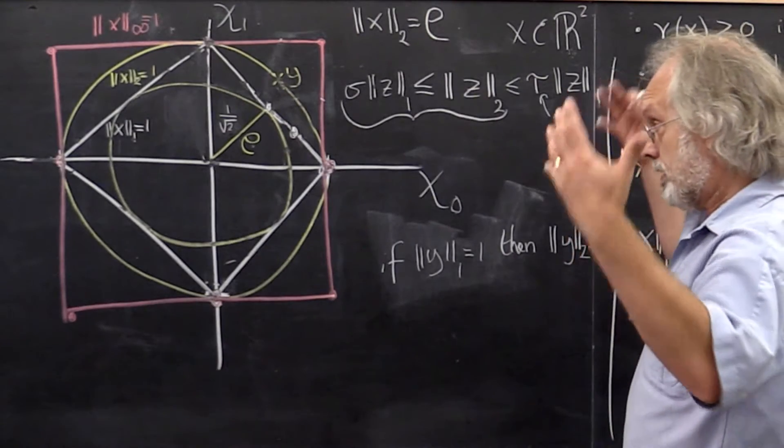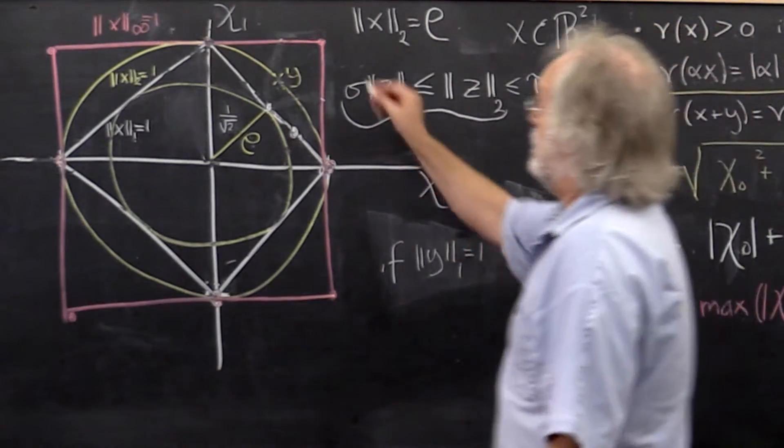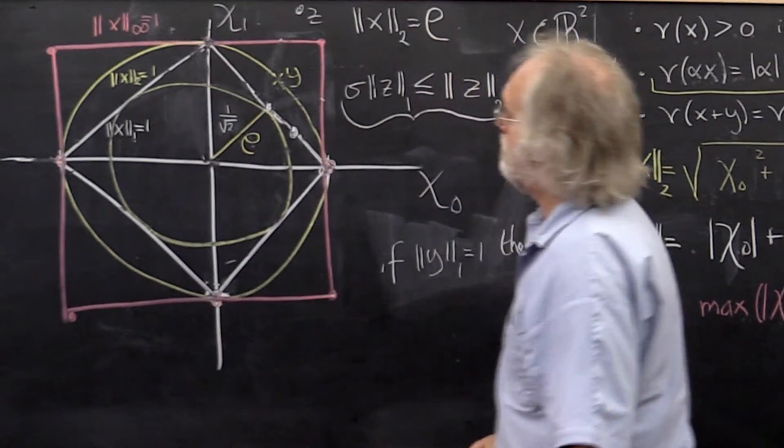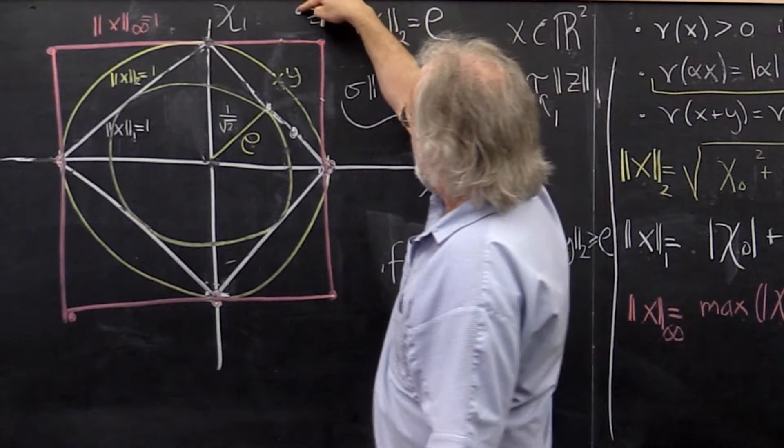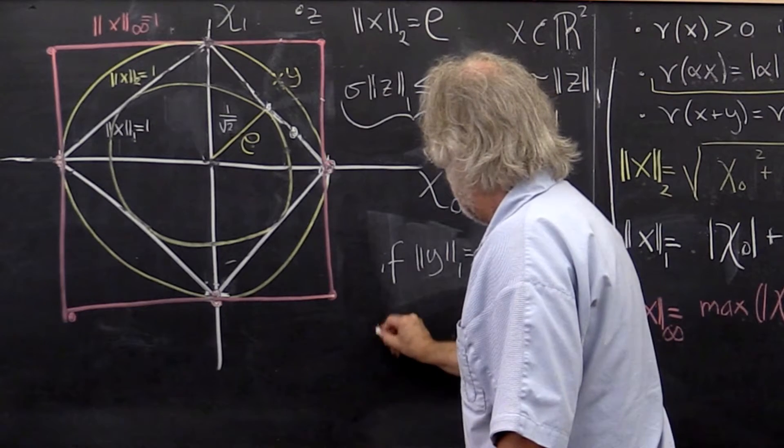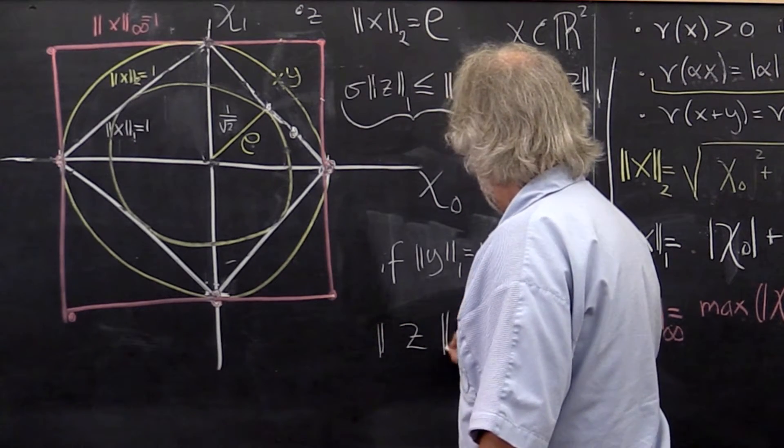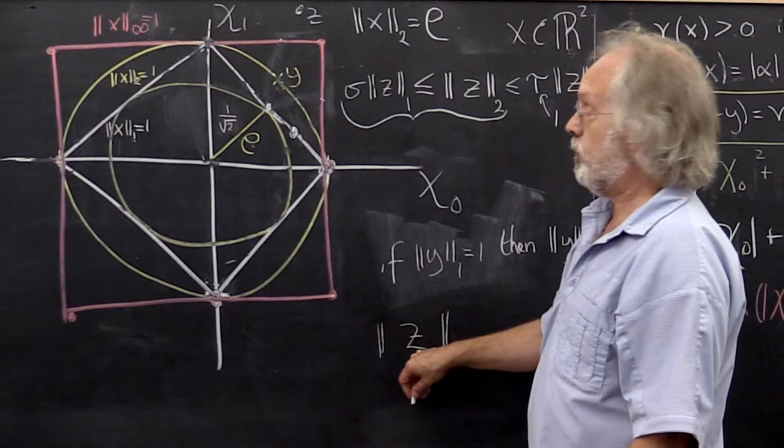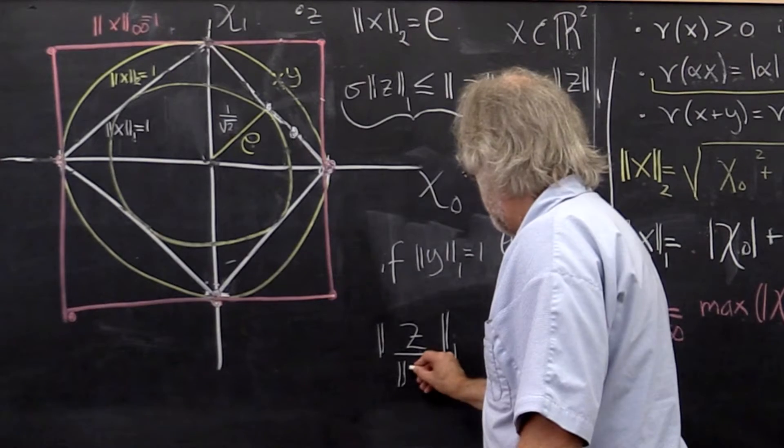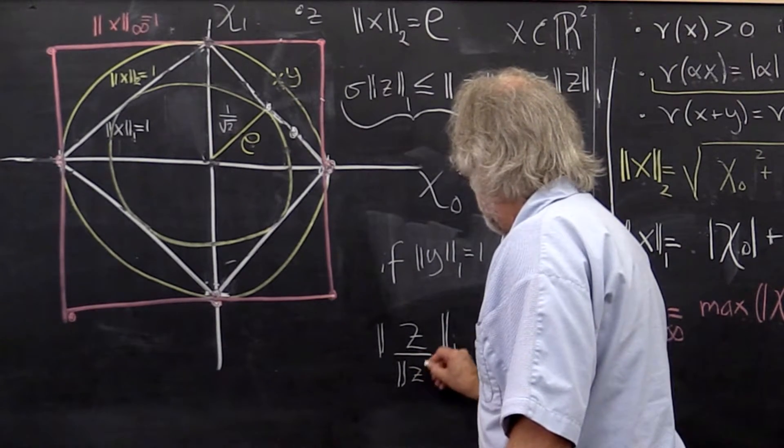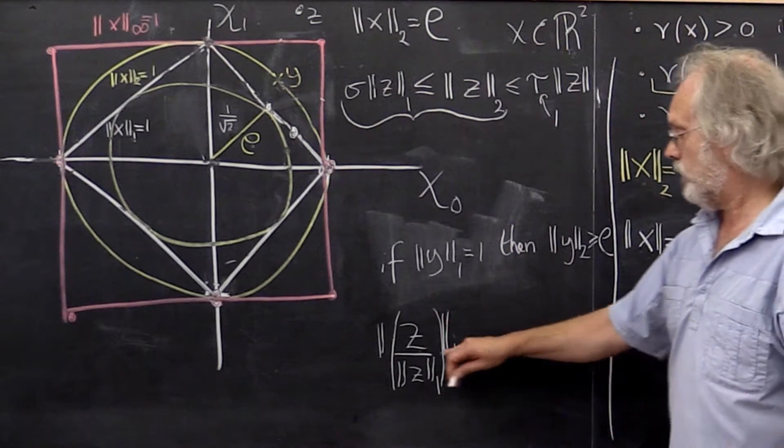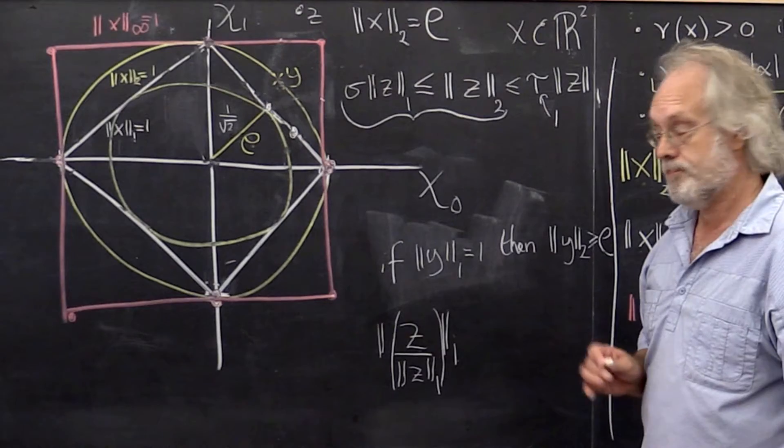Alright. Now let's do what we did before. Let's take an arbitrary point z. Now it's an arbitrary point—it could be inside, it could be outside. And let's look at that point on the unit ball. So we want to look at the 1-norm of z. In general, that would not be equal to 1. But if we divide it by its 1-norm, then we end up with a vector with 1-norm equal to 1.